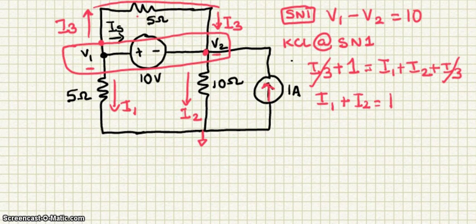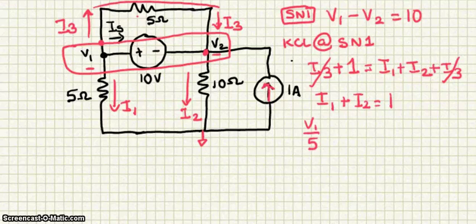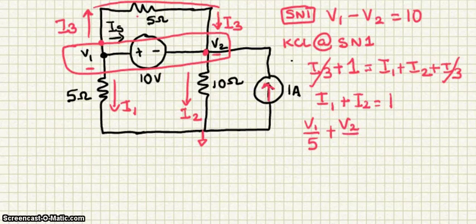I1 can be written as V1 minus 0 divided by 5, in other words V1 divided by 5. And I2 can be written as V2 minus 0 divided by 10, so V2 over 10.